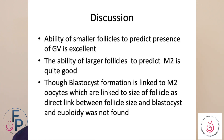Smaller follicles are more likely to produce GV oocytes, and that correlation is excellent. The ability of larger follicles to predict metaphase II oocytes is pretty good. Since you can only fertilize mature oocytes, there should be a link to blastocyst conversion. And though blastocyst formation is linked to metaphase II oocytes, which is also linked to follicle size, this direct link was not found in the study.